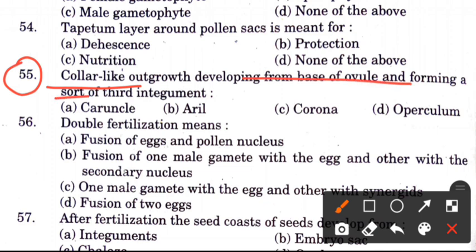Question 55: A collar-like outgrowth developing from the base of the ovule and forming a sort of third integument — options are caruncle, aril, corona, or obturator. The answer is B, aril.